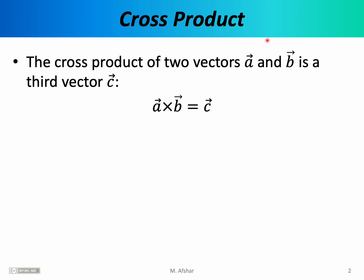Imagine you have two vectors, A and B. If you take the dot product of vectors A and B, what you get is a number, a scalar quantity — that's why the dot product is also known as the scalar product. If you take the cross product of vectors A and B, you get a third vector, a new vector which I'm calling C here. For this reason, the cross product is sometimes known as the vector product, because the output it produces is a new vector.